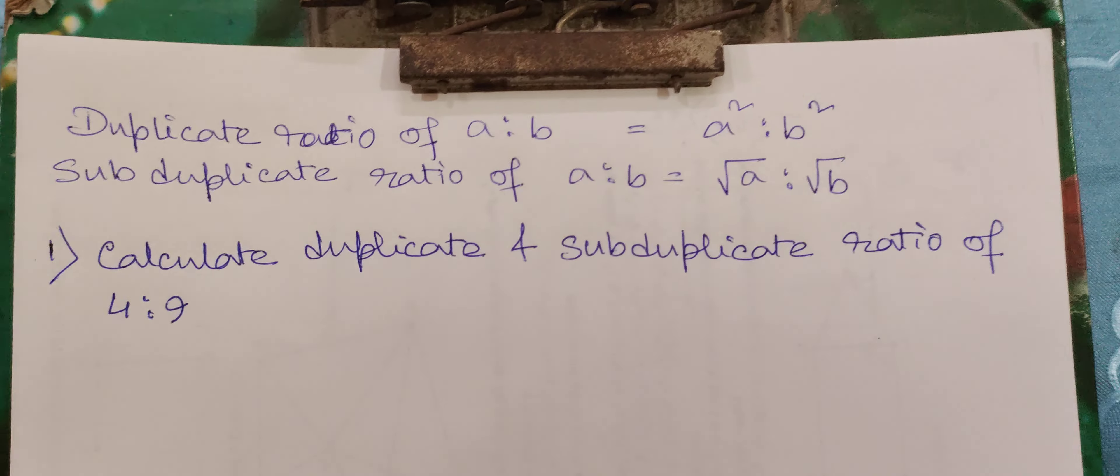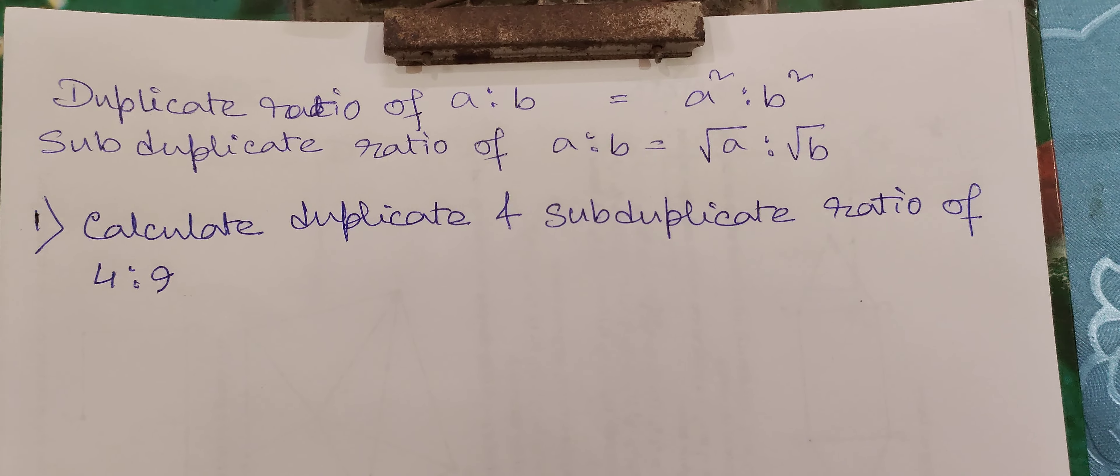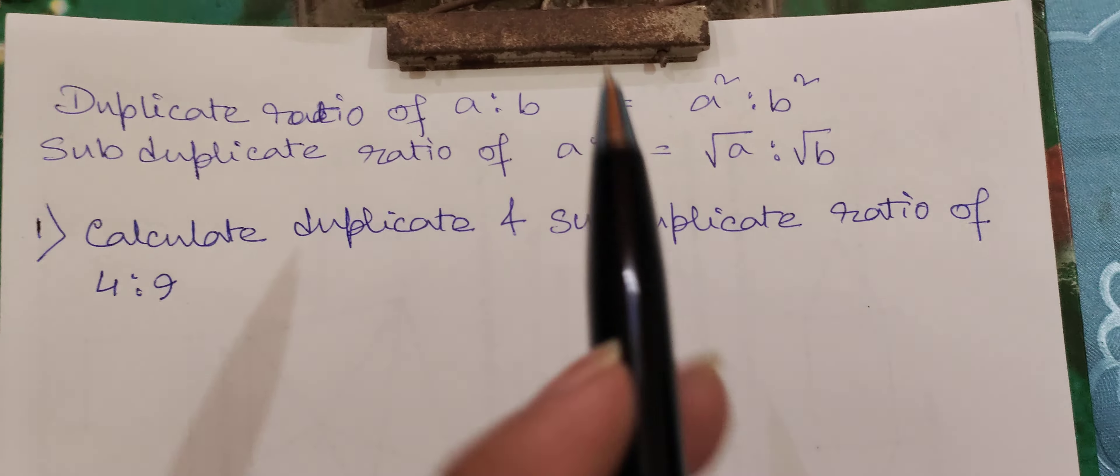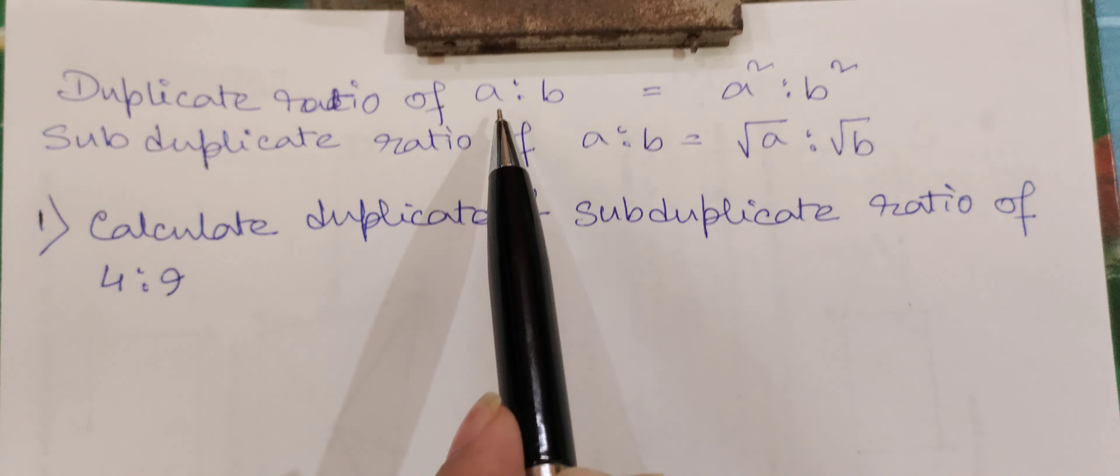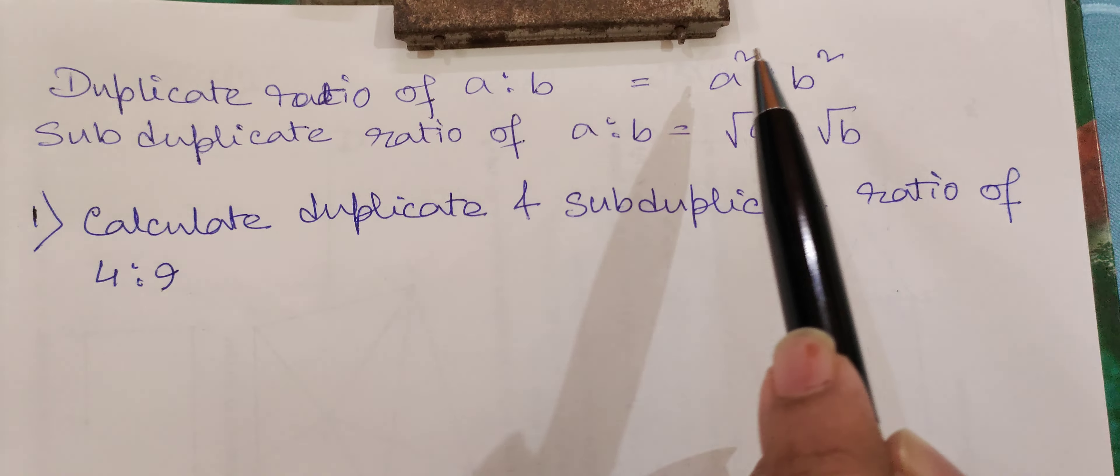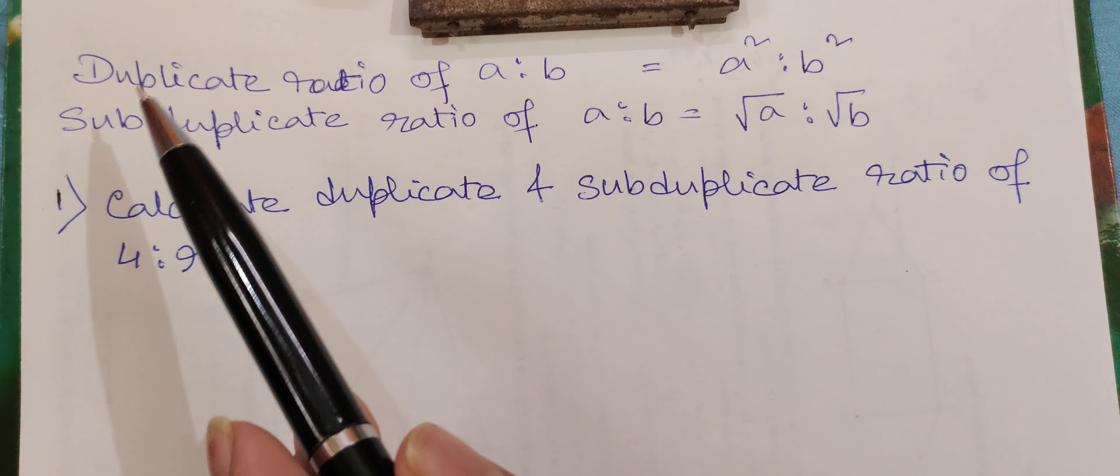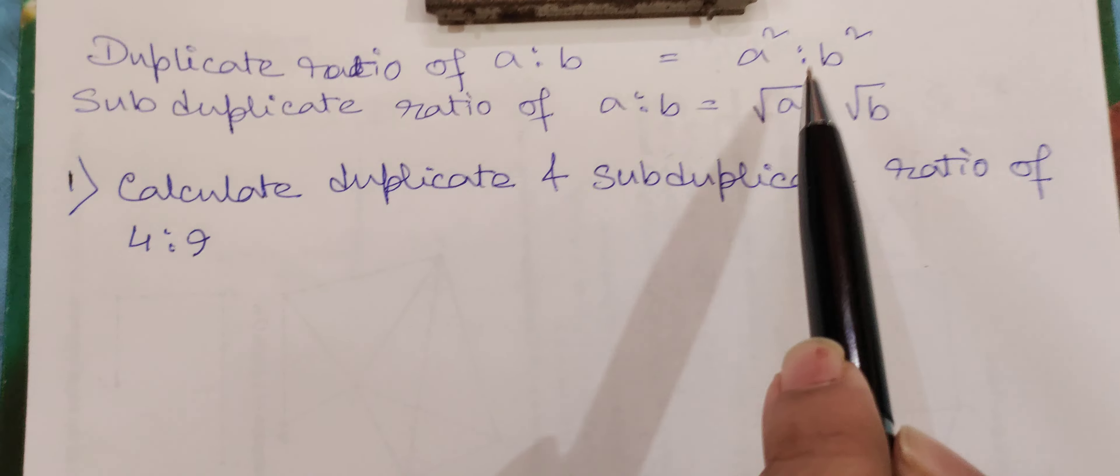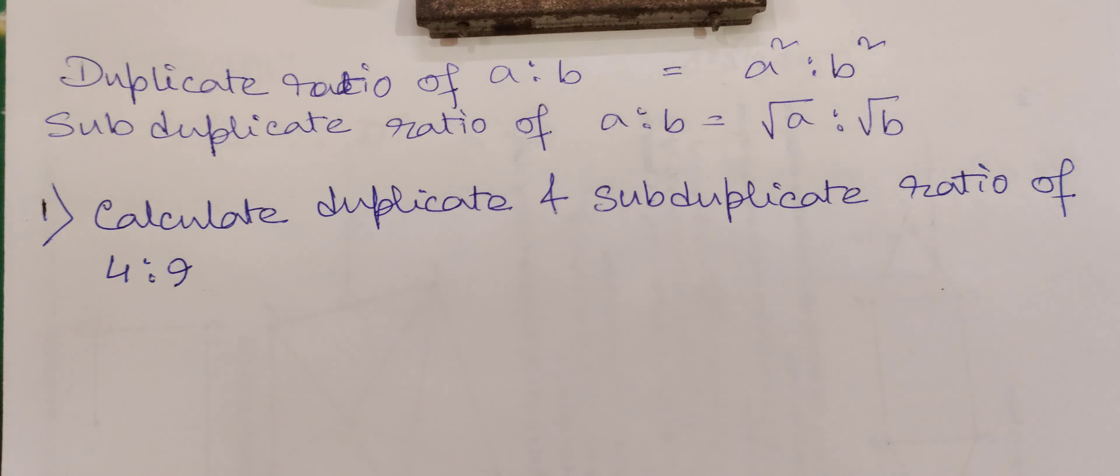Hi y'all, in this video we will discuss duplicate ratio and subduplicate ratio. So let there be ratio a is to b. Duplicate ratio of a is to b will be a square is to b square, and subduplicate will be equal to root a is to root b. That means whenever we have to calculate duplicate ratio we will square those, and whenever we have to find subduplicate we have to square root all those.